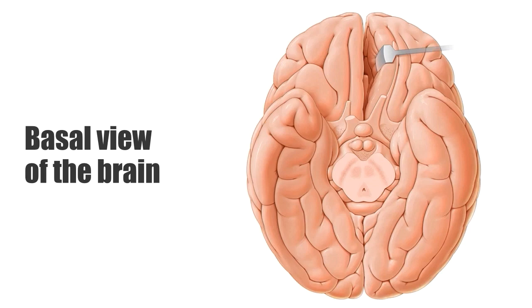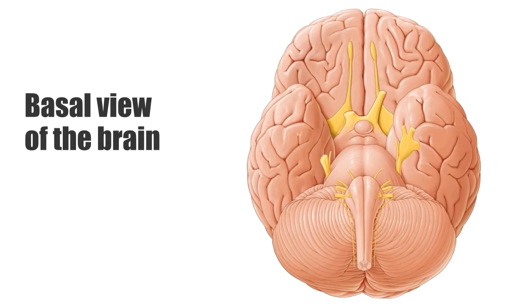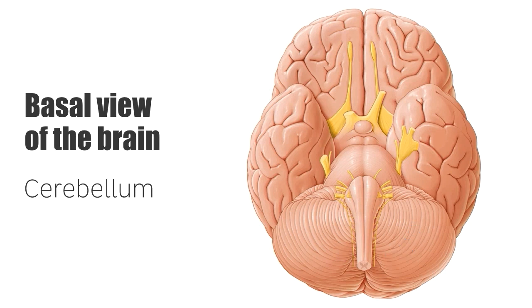Before we start describing the several structures that we see in this basal view of the brain, just for orientation purposes, I want to show you that at the base of the brain we also see these structures. The yellow structures are the cranial nerves, but we also see here the cerebellum, which is this structure here, and you also see here this structure which is the brain stem.